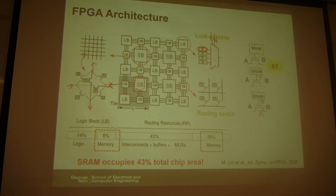Looking at the SRAM percentage in an FPGA, 40% to 50% of the chip area is occupied by those SRAM cells, also called configuration bits. Every time you turn on your FPGA, you need to write those SRAM cells to the correct data pattern, which takes some time. After the SRAM bits are configured, you can run your logic. The question is: can we replace the SRAM with emerging technology?